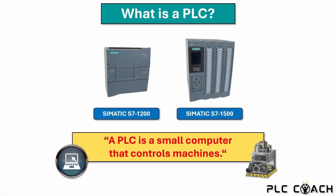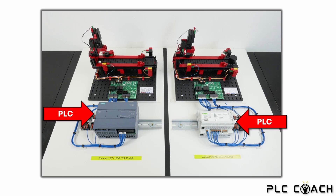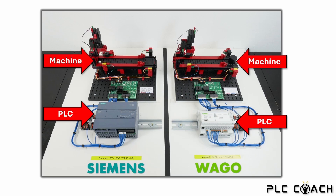Now that you know what a PLC is and its various applications, let's connect theory to practice. In this demonstration you will see two PLCs side by side. On the left we have a Siemens controller and on the right a PLC from VAGO. They may look different but they serve the same purpose: controlling machines. I don't have access to real industrial machines at home, but we will use these impressive training models instead. Here you see a small conveyor belt paired with a punching station. In my courses I work a lot with training models and practical simulations. This makes learning enjoyable and ensures success.